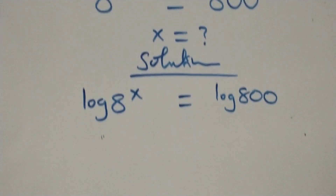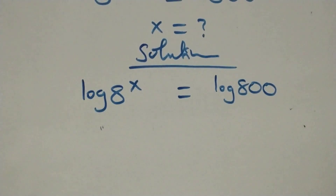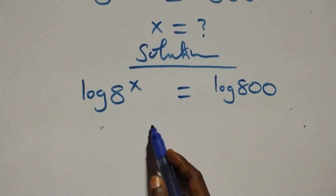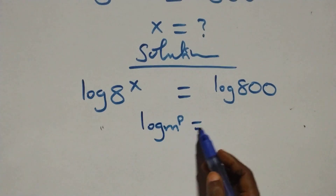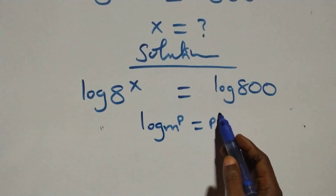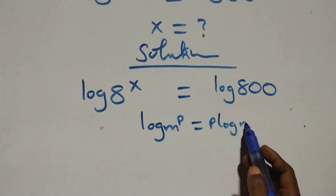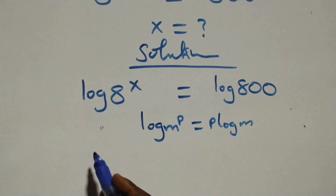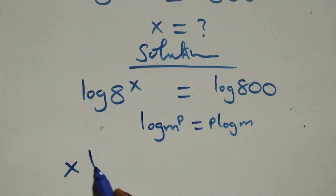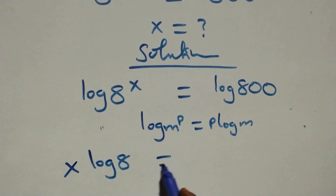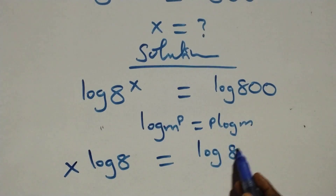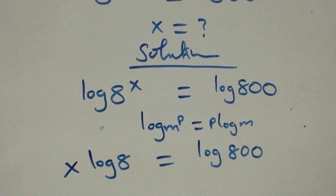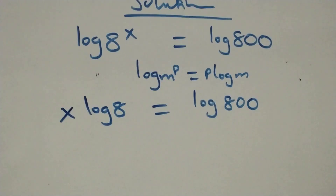Here we apply the power rule of logarithms: when we have log of n raised to power p, this equals p times log n. So here we have x times log 8 equals log 800.